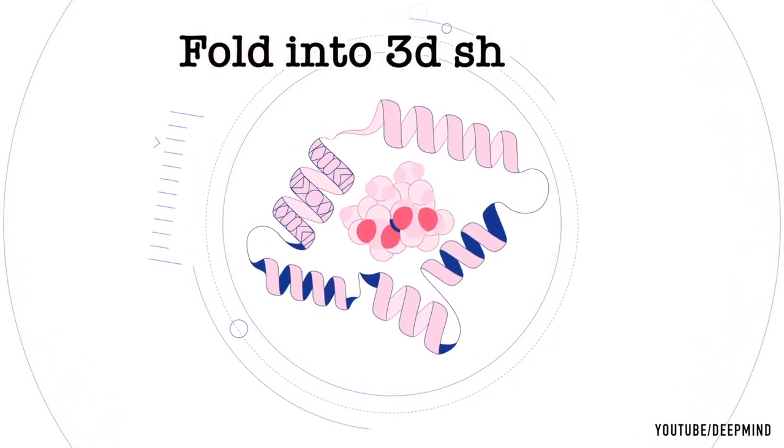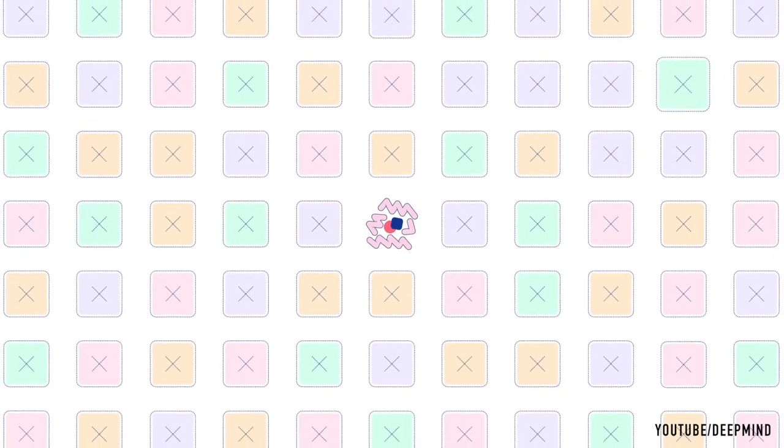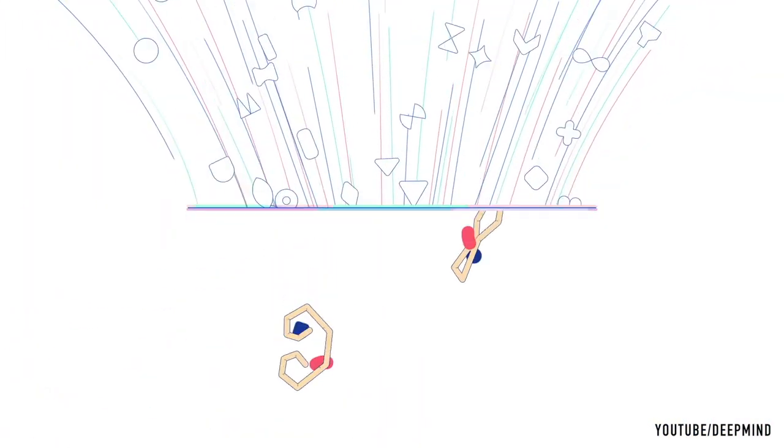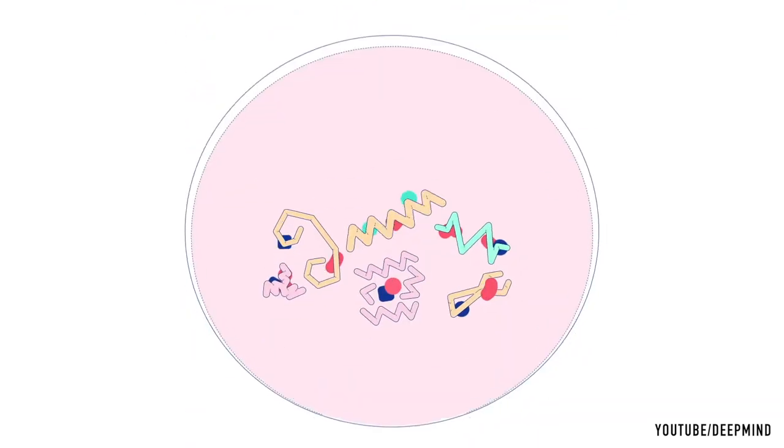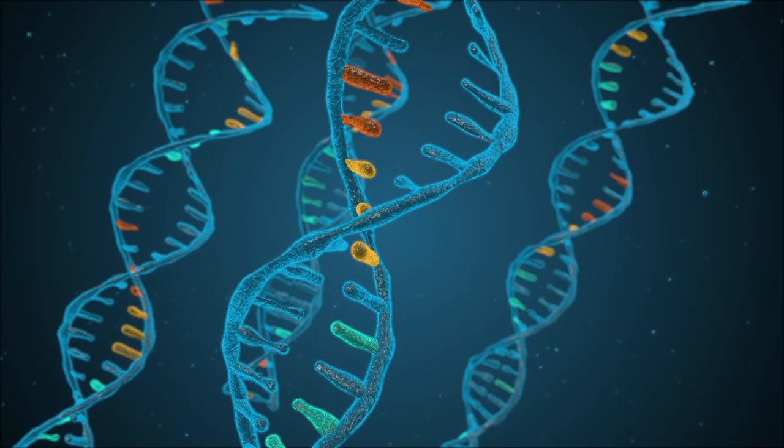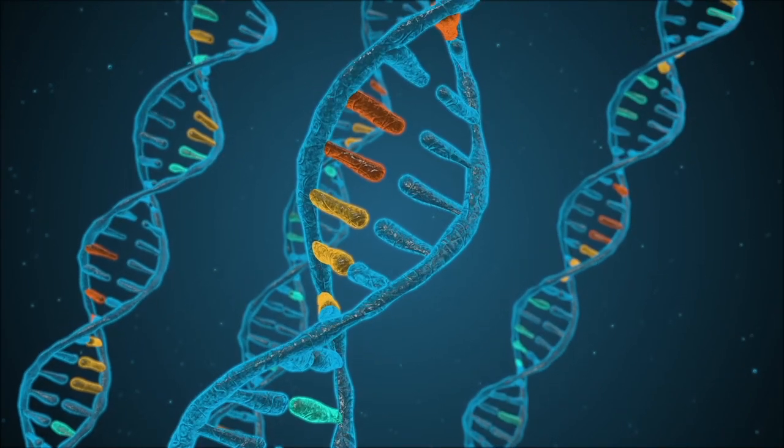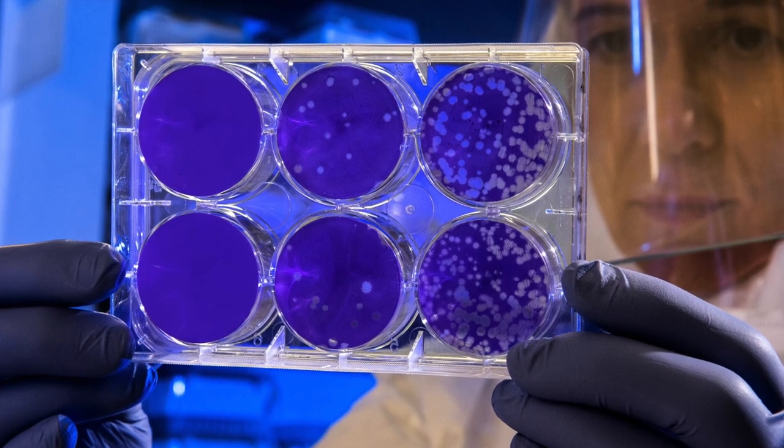They first fold into intricate three-dimensional shapes before being functional in the body. For example, a protein has to fold in a specific 3D shape that helps target a virus or carry oxygen in the blood. It is therefore crucial to comprehend how proteins will fold in order to understand how organisms function, and more broadly, how life itself functions.